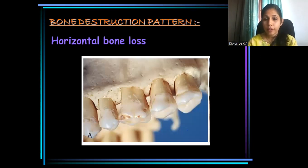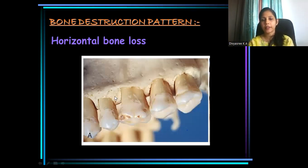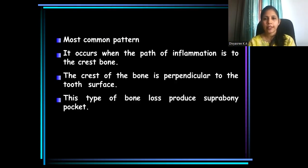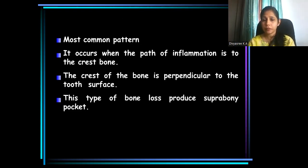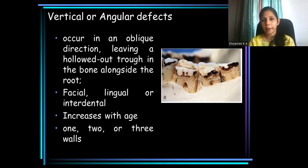One of the most common patterns of bone destruction seen in periodontal disease is horizontal bone loss. This is how an area with horizontal bone loss appears. Such bone loss occurs due to inflammation extending directly into the crest of bone, and usually results in a suprabony pocket.